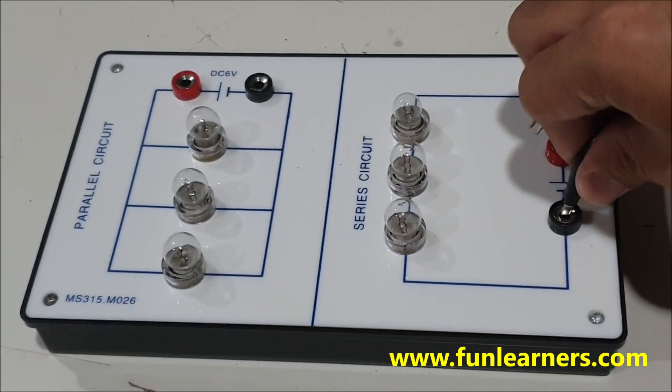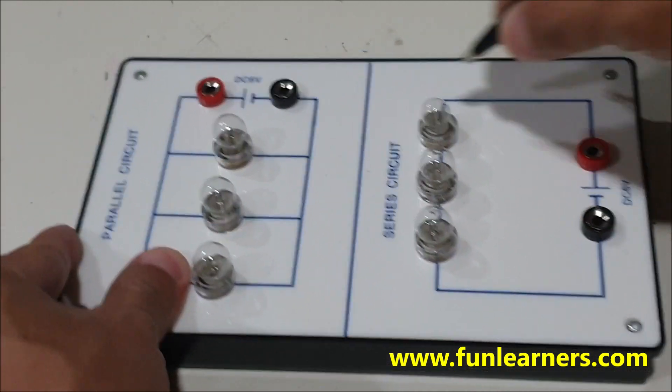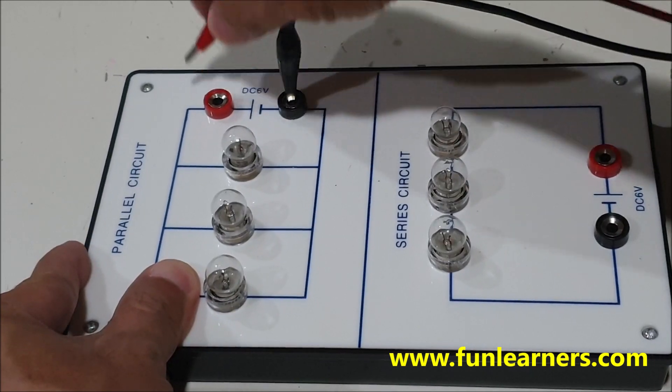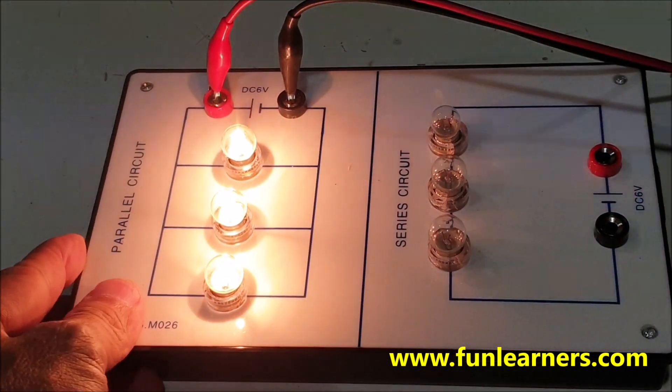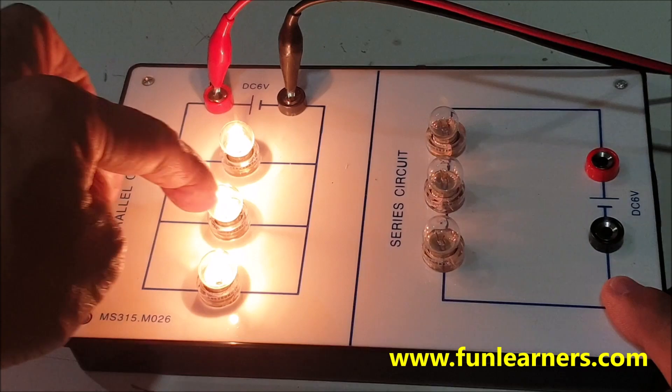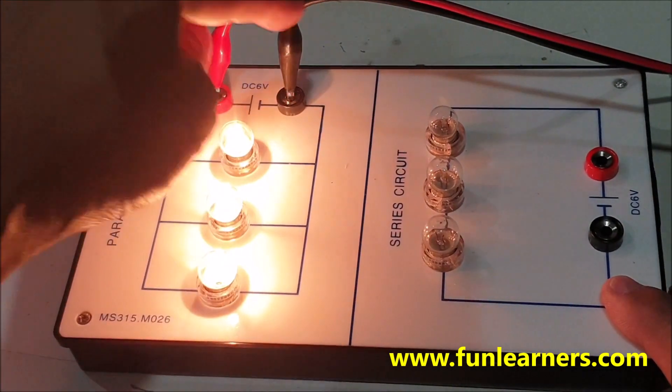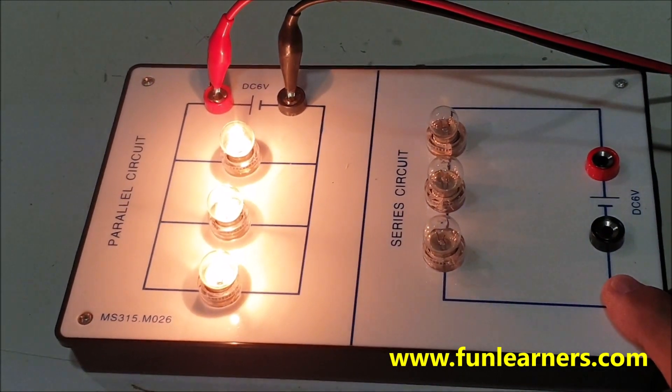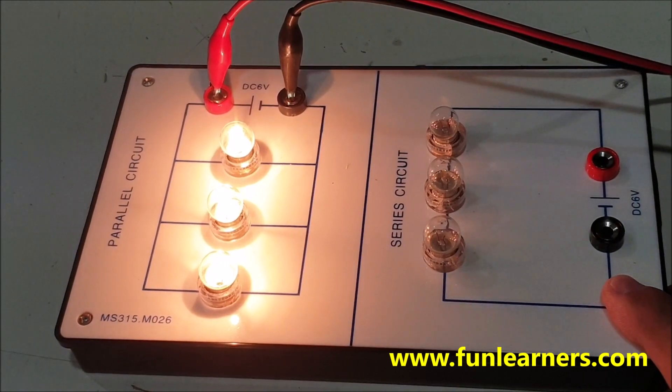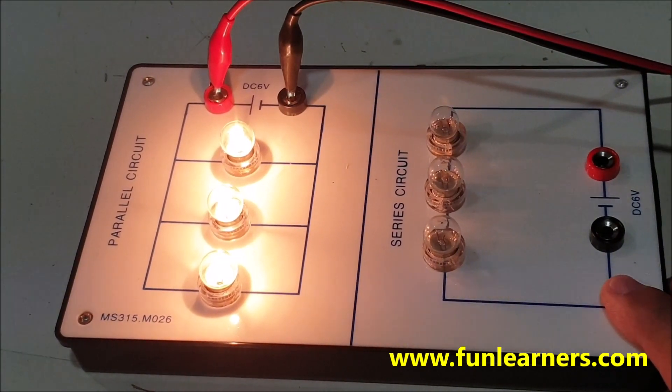into a parallel circuit, the battery here has to work harder. The current will flow through here, flow through here, and flow through here, so these three light bulbs will be brighter. Then what about when we disconnect them?